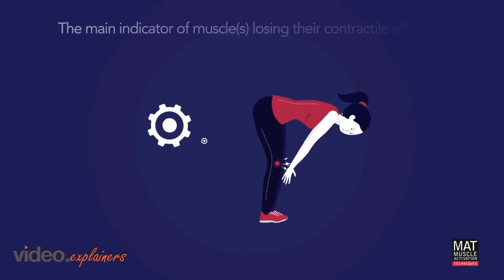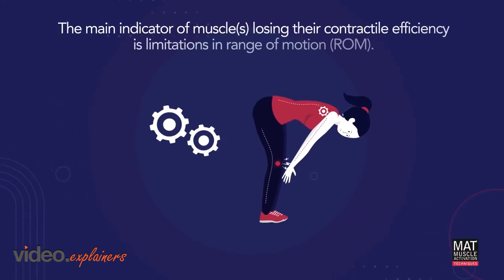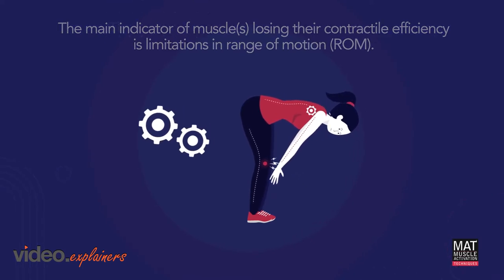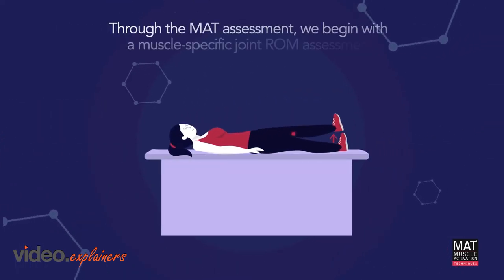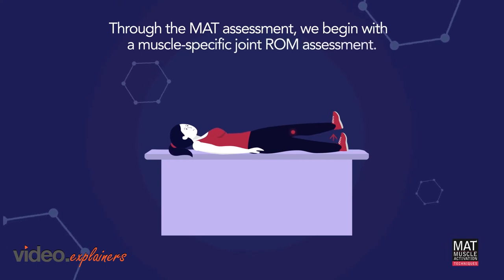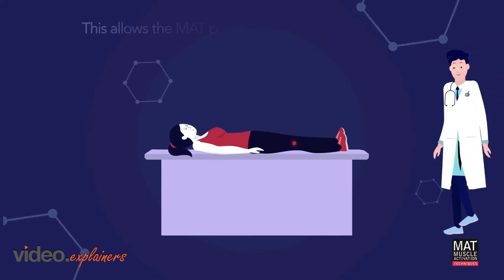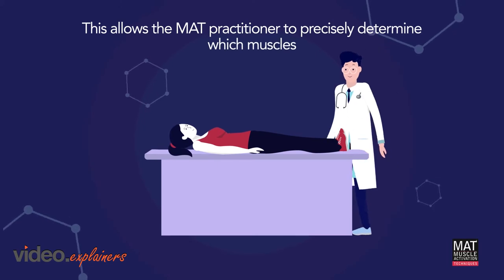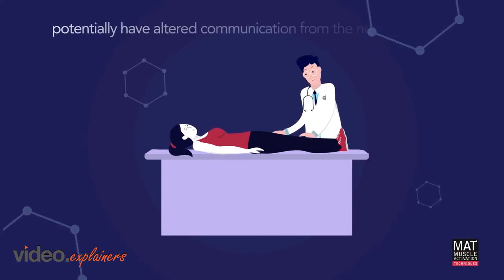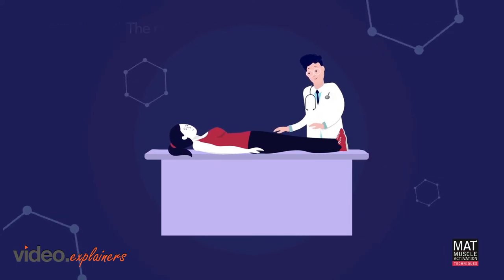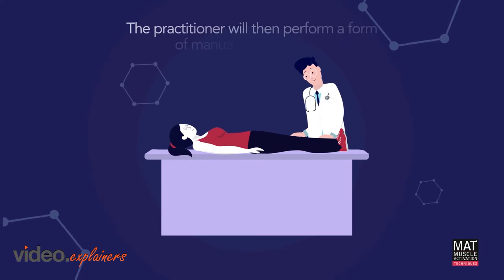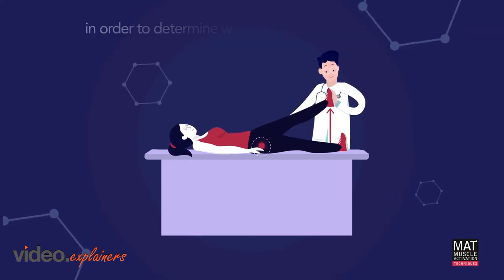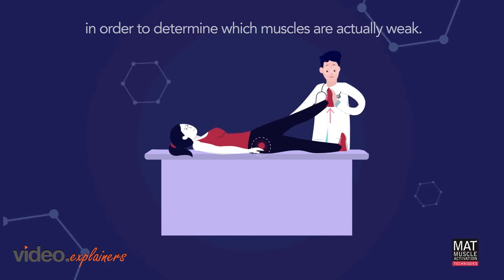The main indicator of muscles losing their contractile efficiency is limitations in range of motion, or ROM. Through the MAT assessment, we begin with a muscle-specific joint range of motion assessment. This allows the MAT practitioner to precisely determine which muscles potentially have altered communication from the nervous system. The MAT practitioner will then perform a form of manual muscle testing in order to determine which muscles are actually weak.